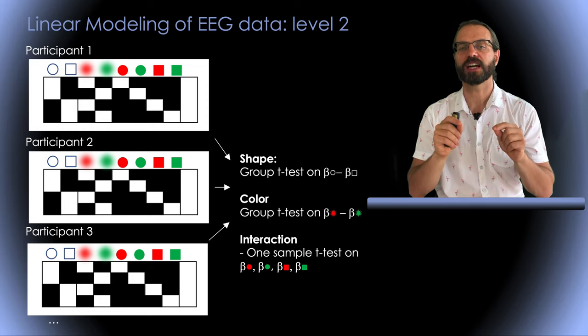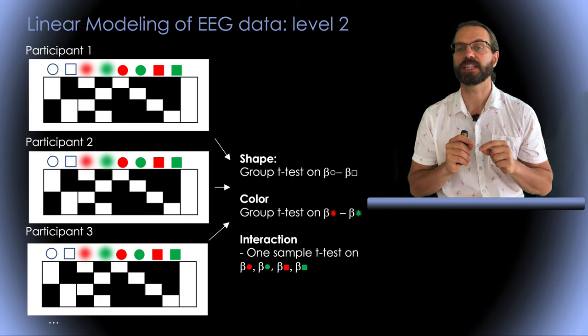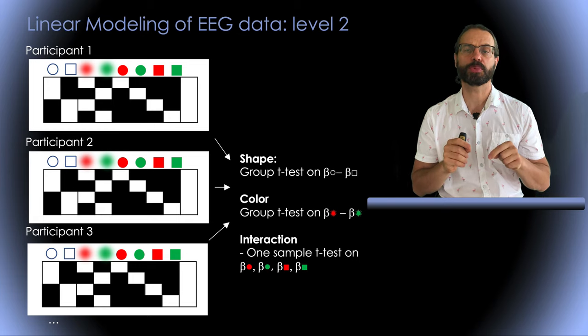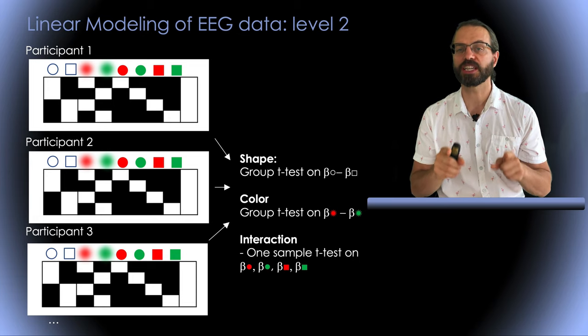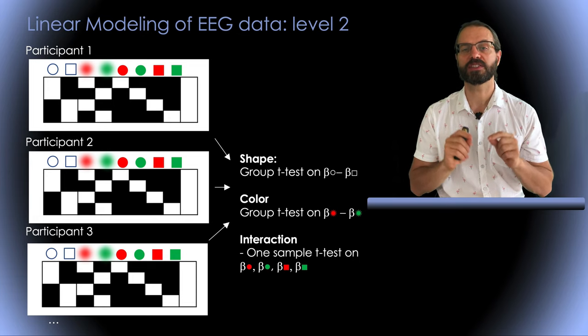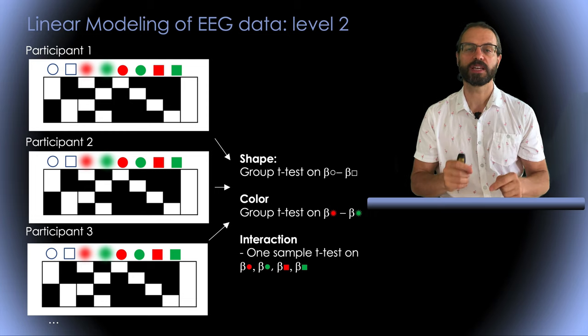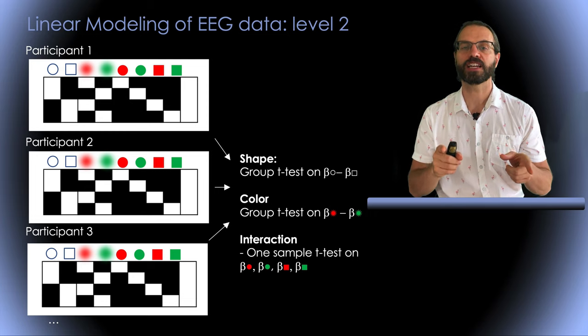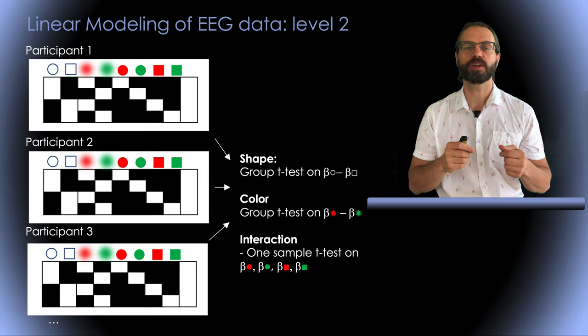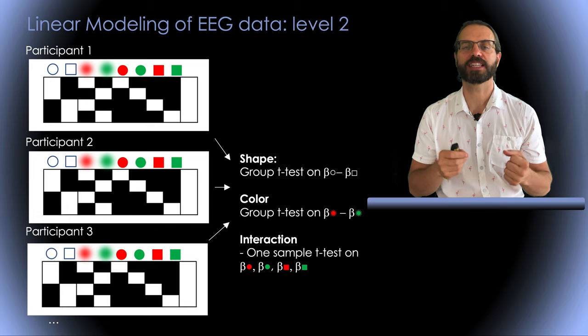Also, I want to reiterate that this is a high-level explanation. There is a lot of detail pertaining to the optimization of these models and the statistical assumptions for using them. For example, I mentioned on this slide and the previous one that we simply apply another GLM at the second level.